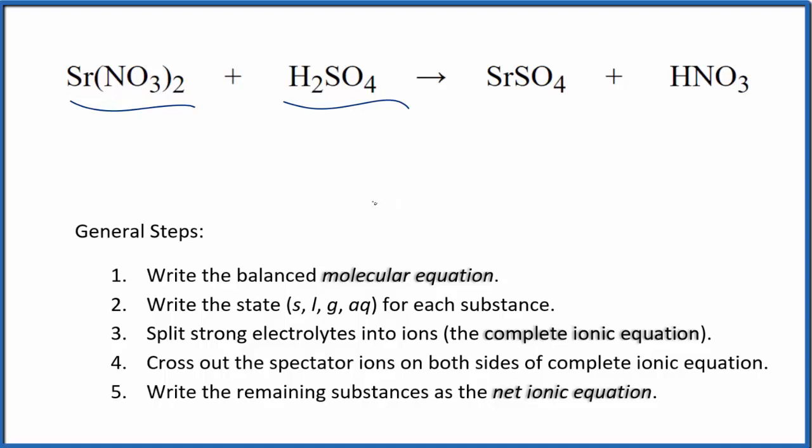The first thing we need to do is balance the molecular equation. This is the molecular equation. I can see right away that I have two nitrates here and just one over here, so I'm going to put a 2 in front of the HNO3. That balances the nitrates, the hydrogens, strontium, and the sulfate. This is the balanced molecular equation.